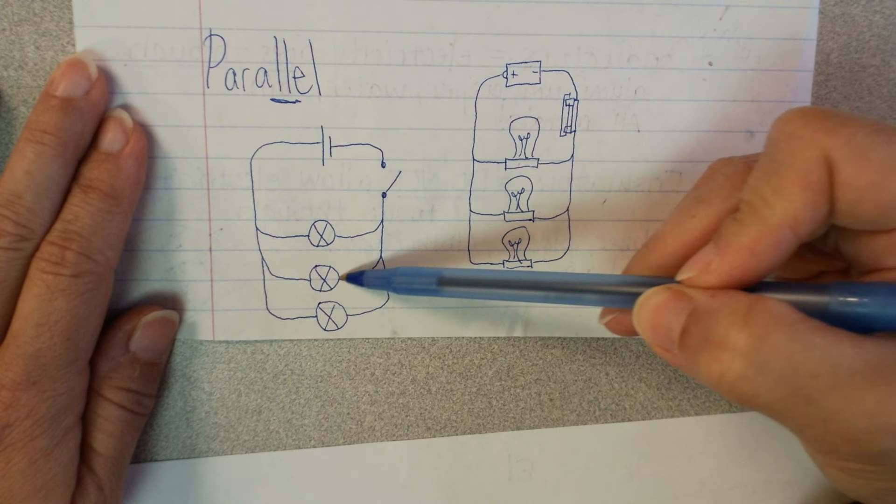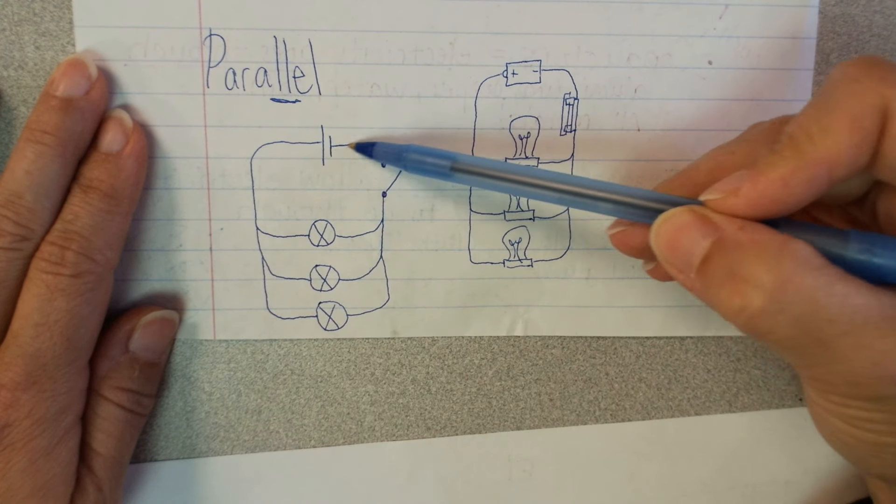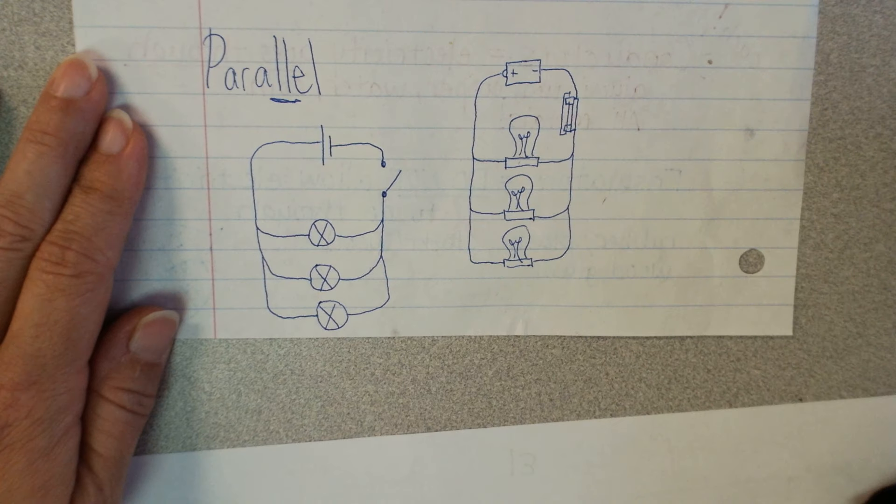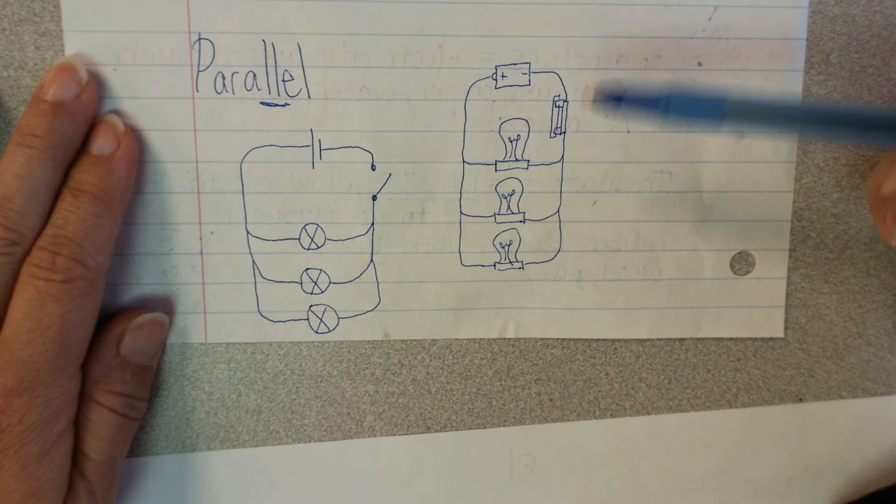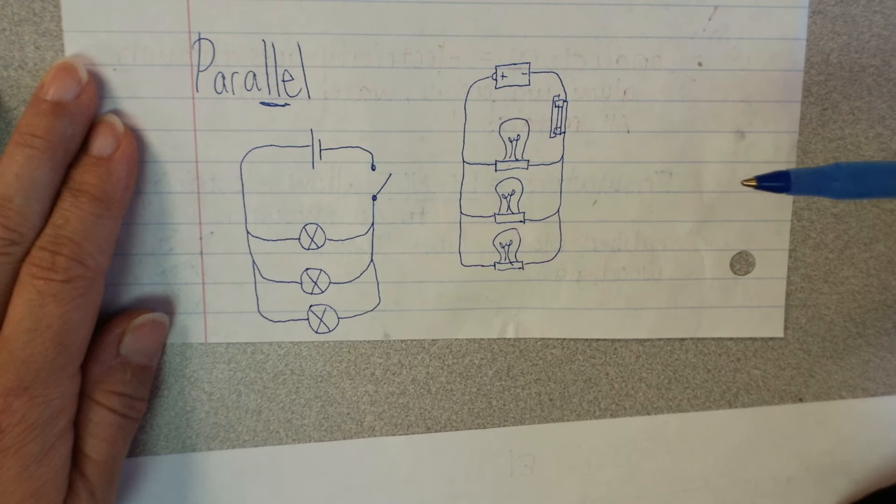But if I were to close this switch, I have one loop in the small, I've got another loop here in the medium, and then my longest loop would be my third loop. And then this is just kind of our cartoon drawing of what that would look like. I've just drawn the switch closed.